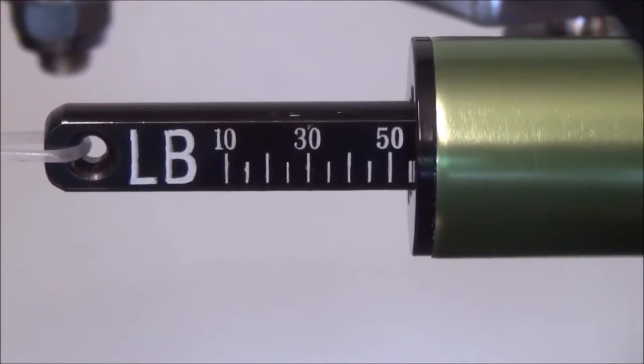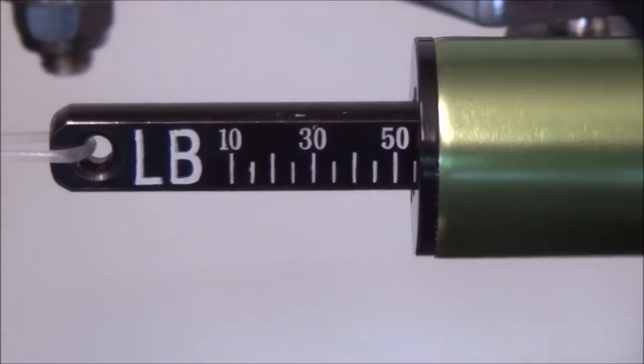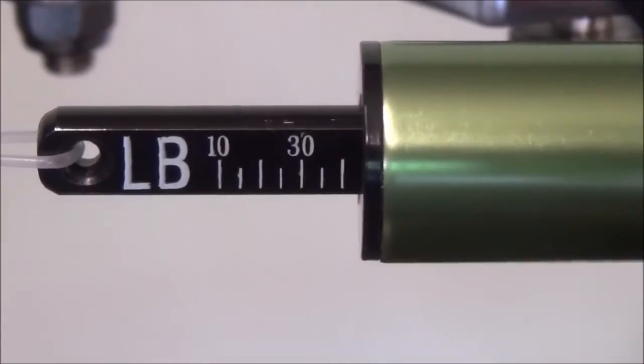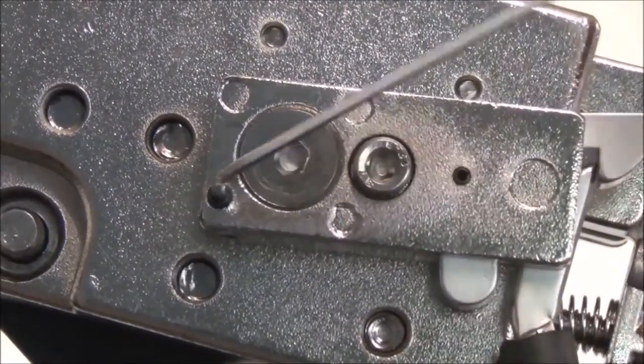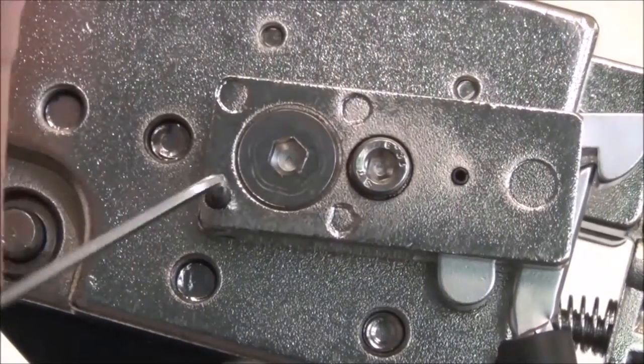This example shows the tension reading 5 pounds lower than the set tension. This example shows the tension reading 5 pounds higher than the set tension. Loosen the 1.5mm set screw holding the adjustment screw in place.